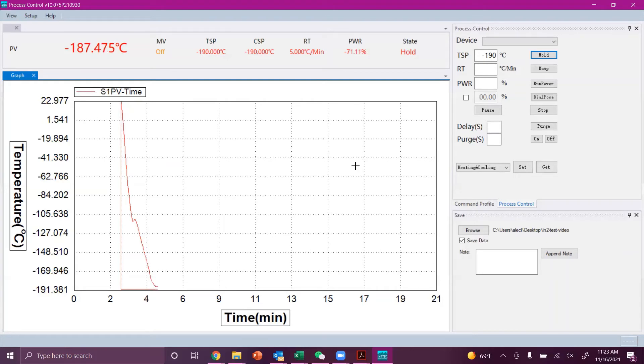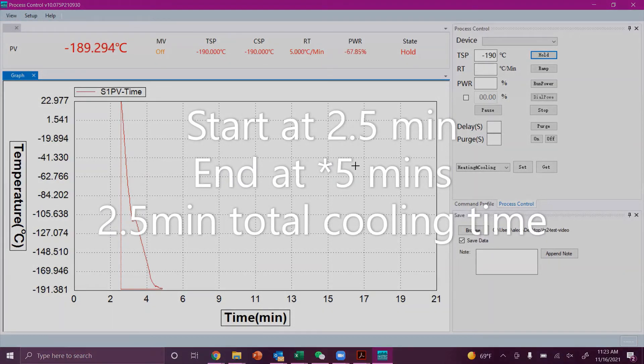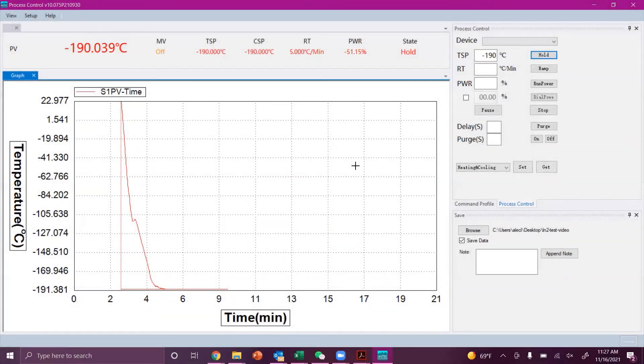In this instance, we used the hold command starting at about 2.5 minutes and we reached our target temperature at the 4 minute mark, so just a total of 1.5 minutes cooling time. You'll then notice the temperature is maintained at the set temperature very closely. The LN2 pump will be given commands by the controller to turn on and off as needed to keep the temperature stable.